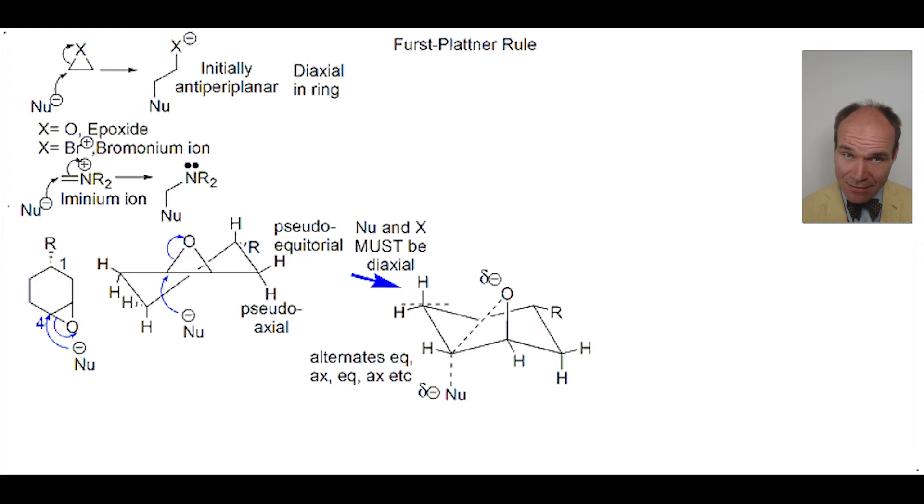So, down would be an example. With this chair, ultimately because the R group must be equatorial to avoid 1,3-diaxial interactions, this hydrogen is down and equatorial.